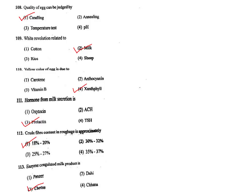Q112. Crude fiber content in roughage is approximately 18–20%. The correct answer is option 1.